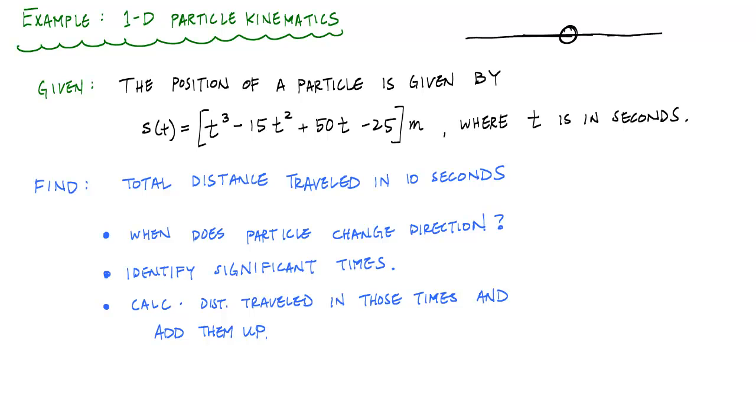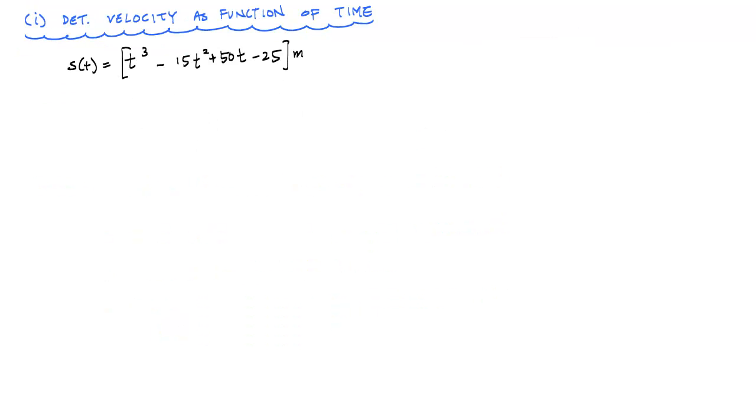Let's go ahead and determine the velocity as a function of time. Here's my position as a function of time. All you got to do is remember that the velocity is the first time derivative of position, so ds/dt. Here, this will just be 3t² - 30t + 50, and this is supposed to output units of meters per second.